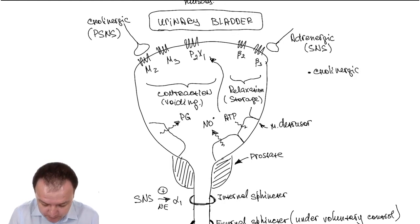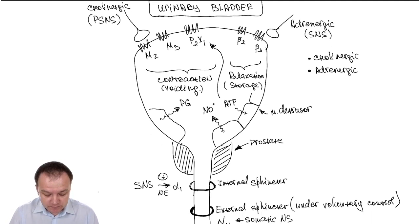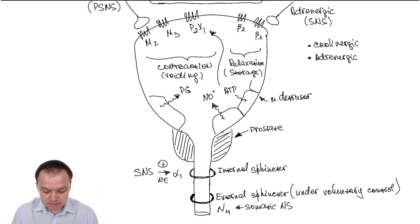We have adrenergic inputs from sympathetic nervous system, and activation of sympathetic nervous system causes relaxation, responsible for storage, beta-2, beta-3 receptors, and also increases internal sphincter tone in order to prevent leaking of the urine.